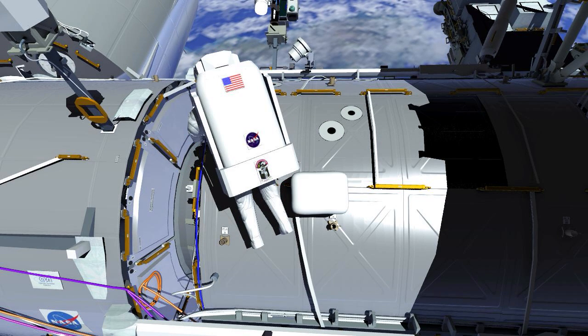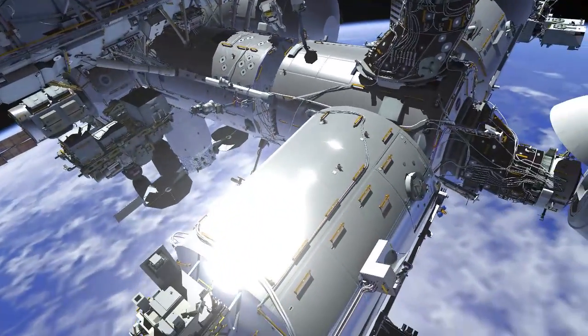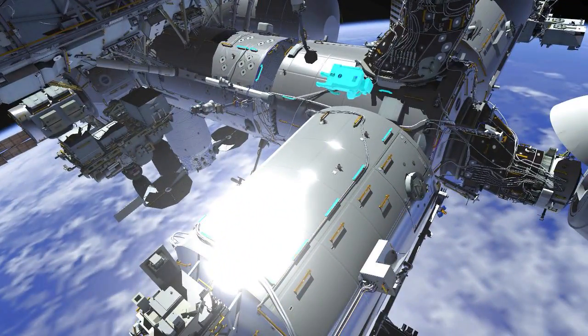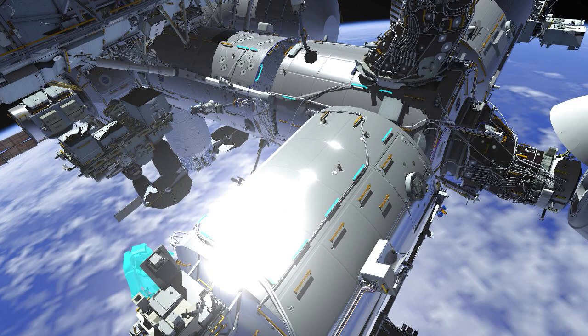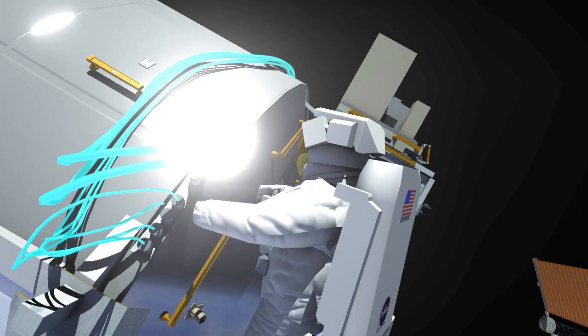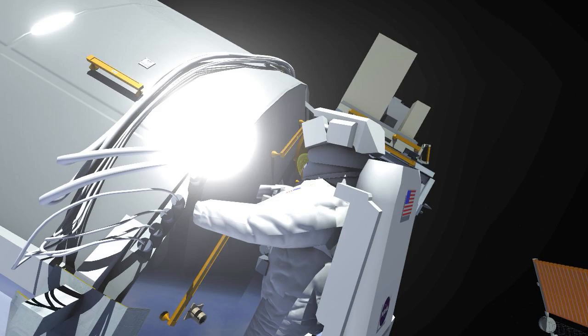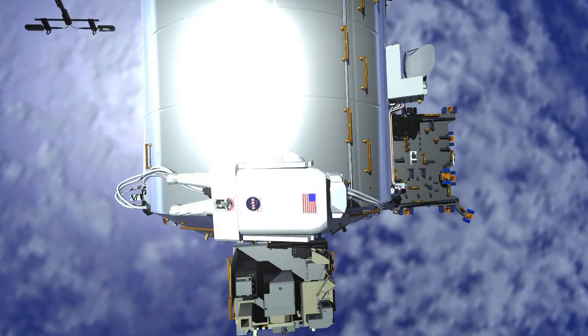EV2 takes a cable adapter from the tool bag and translates to the starboard end cone of the European Space Agency's Columbus module. EV2 installs the jumper, which passes power and data from Columbus to the Bartolomeo external platform.